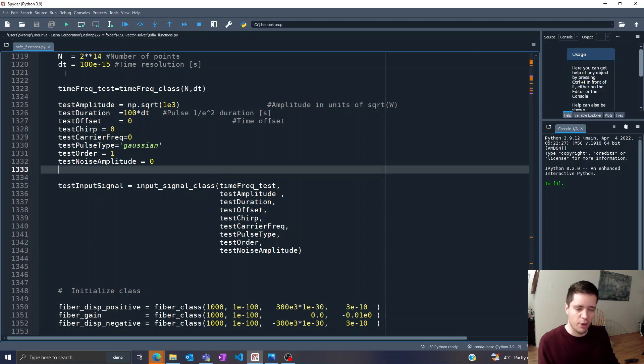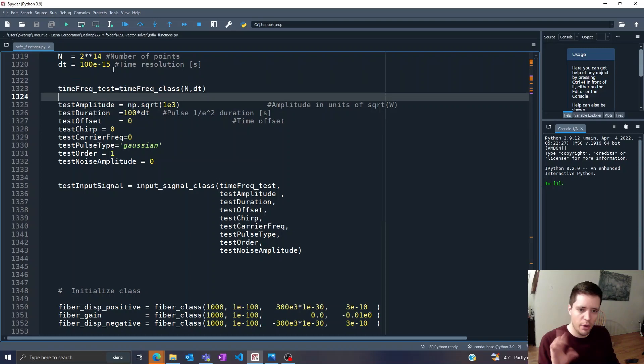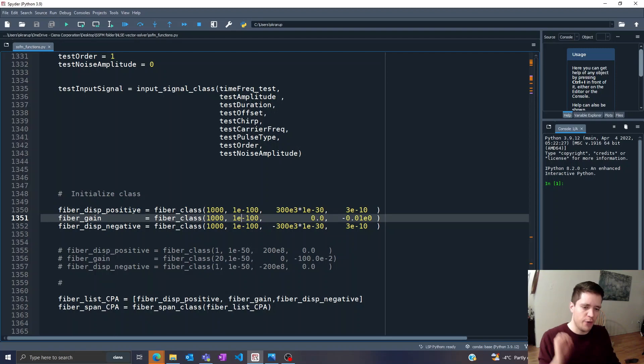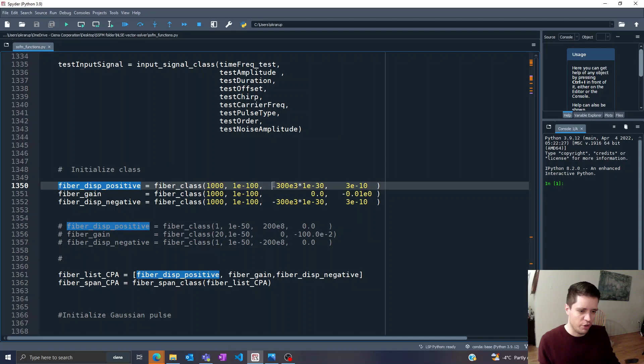For that purpose I created a quick simulation here using my pre-written software that I made myself. In order to test this out, I first generated a time base with a certain number of points and a certain time resolution, then I created a Gaussian pulse here and initialized it, and then I created a fiber span that consists of three different fibers.